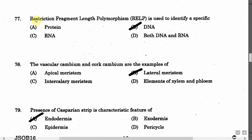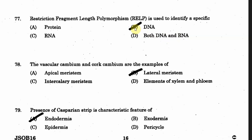The next question is: Restriction Fragment Length Polymorphism (RFLP) is used to identify specific — Option A: Protein. Option B: DNA. Option C: RNA. Option D: Both DNA and RNA. The correct answer is Option B, that is RFLP is used for DNA identification.